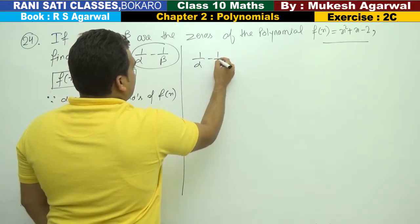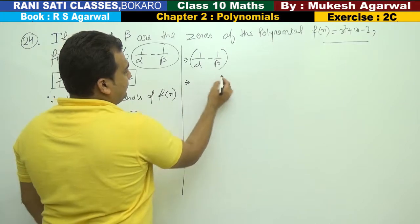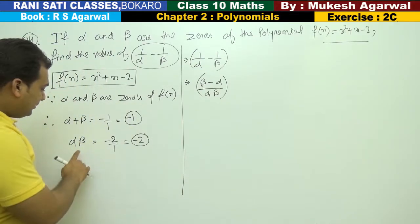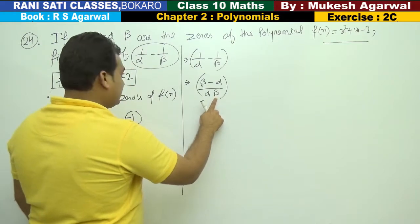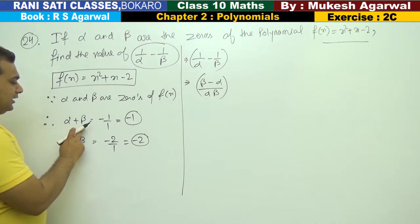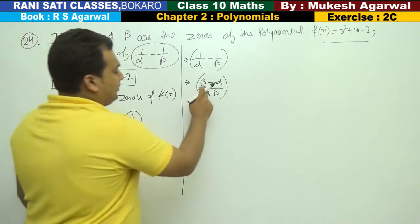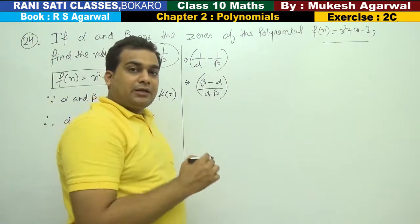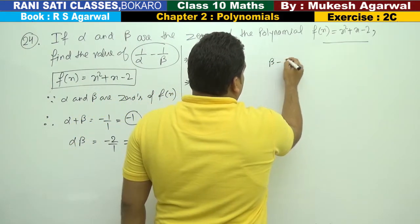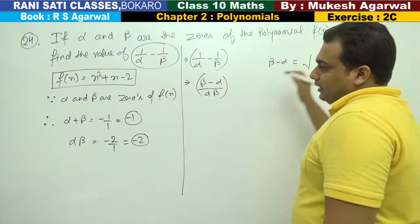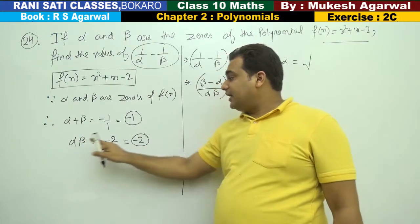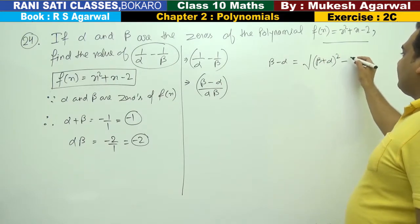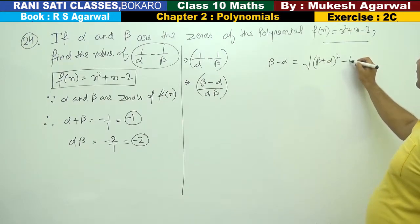We need to find 1 by alpha minus 1 by beta. Taking LCM, this becomes beta minus alpha divided by alpha beta. Now we need beta minus alpha, and we have beta plus alpha available. We use the formula: beta minus alpha equals the square root of beta plus alpha whole squared minus 4 alpha beta.